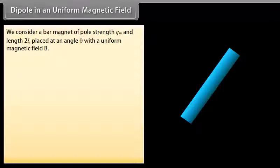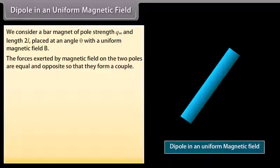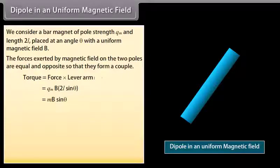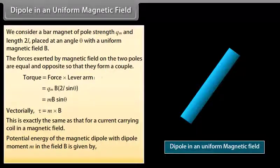Dipole in a uniform magnetic field: We consider a bar magnet of pole strength Qm and length 2L placed at an angle theta with a uniform magnetic field B. The forces exerted by the magnetic field on the two poles are equal and opposite so that they form a couple. Torque is equal to force into lever arm. By putting the values in the above equation, we get torque equals M·B·sin(theta). Vectorially, it is represented as tau = M × B. This is exactly the same as that of a current carrying coil in a magnetic field. Potential energy of the magnetic dipole with dipole moment M in the field B is given by the negative dot product of M and B.